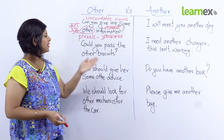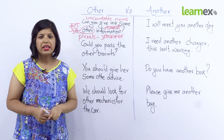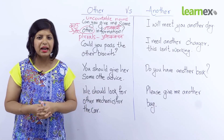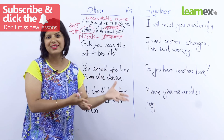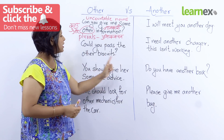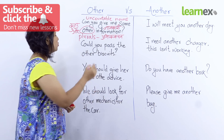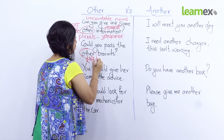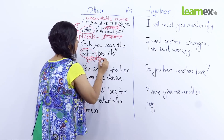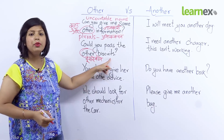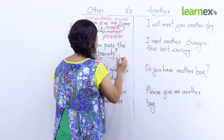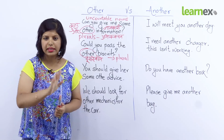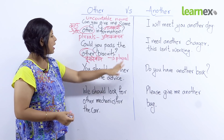Next example yehaan pe hai: 'Could you pass the other biscuits?' Suppose aap chai peene baithe hain aur saath mein bahut saare biscuits hain. Lekin aapko yeh waale nahi chahiye — aapko Parle-G nahi chahiye, aapko Oreo biscuits chahiye. Toh aap saamne waale ko kahenge: 'Could you pass the other biscuits?' — matlab doosre waale biscuits. Yehaan pe 'biscuits' plural form mein hai — ek se adhik. Ek ke liye 'one biscuit', ek se adhik ke liye 'biscuits'.